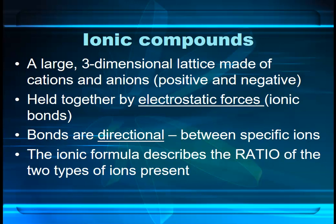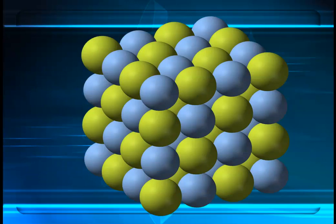Probably the most important thing to be aware of is that the formula of an ionic compound describes the ratio of the ions. So if you think of sodium chloride, NaCl, all that's telling you is that for every sodium ion there is a chloride ion. There is no such thing — let me say this very clearly — there is no such thing as a molecule of sodium chloride with one sodium ion and one chloride ion. What you have is this three-dimensional lattice consisting of millions, billions, or trillions of ions, all alternating.